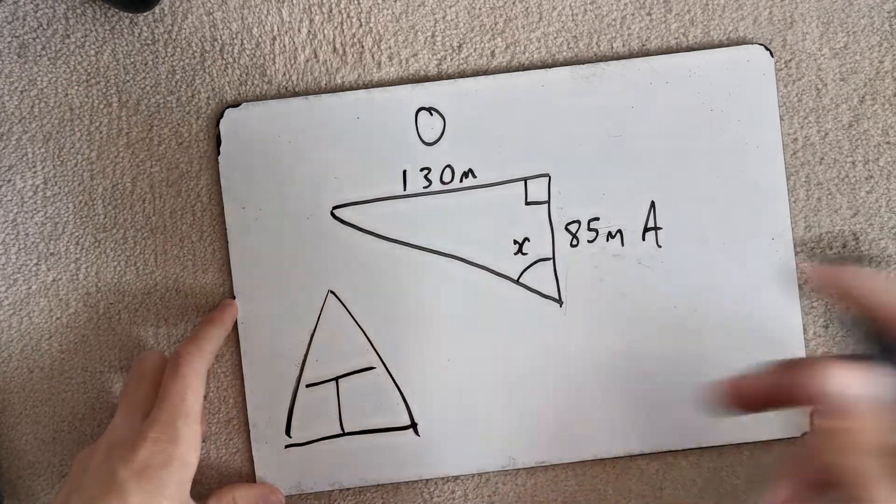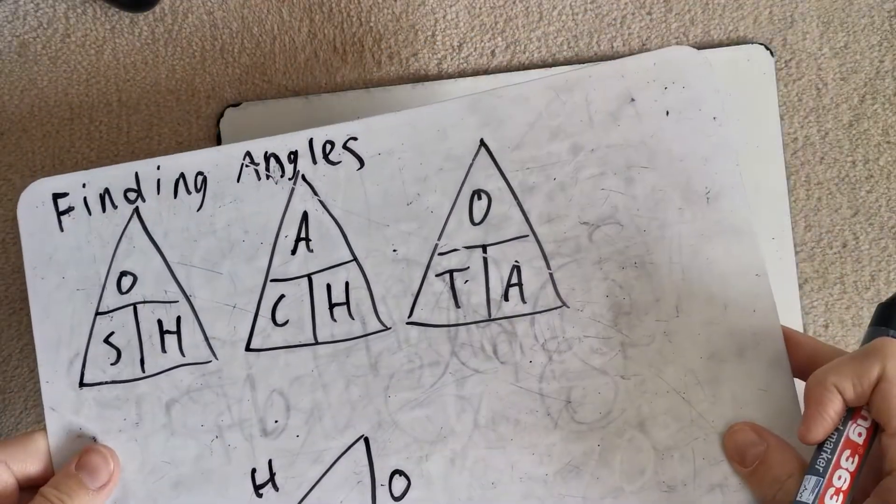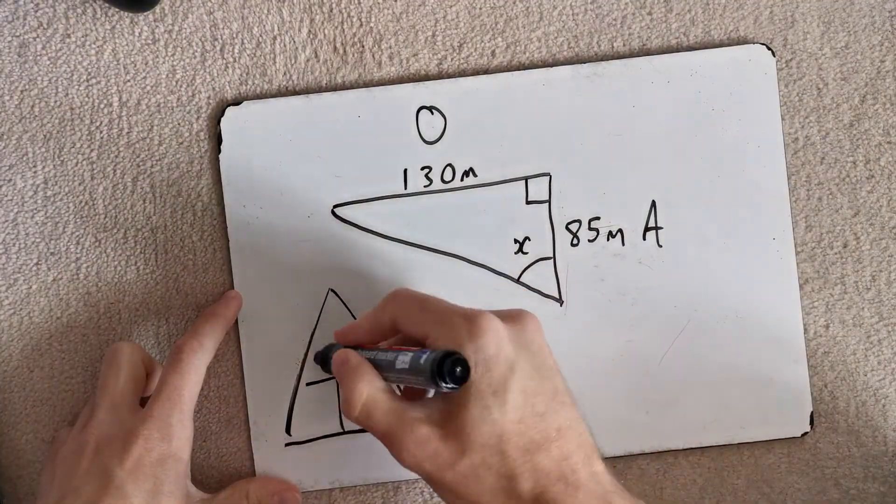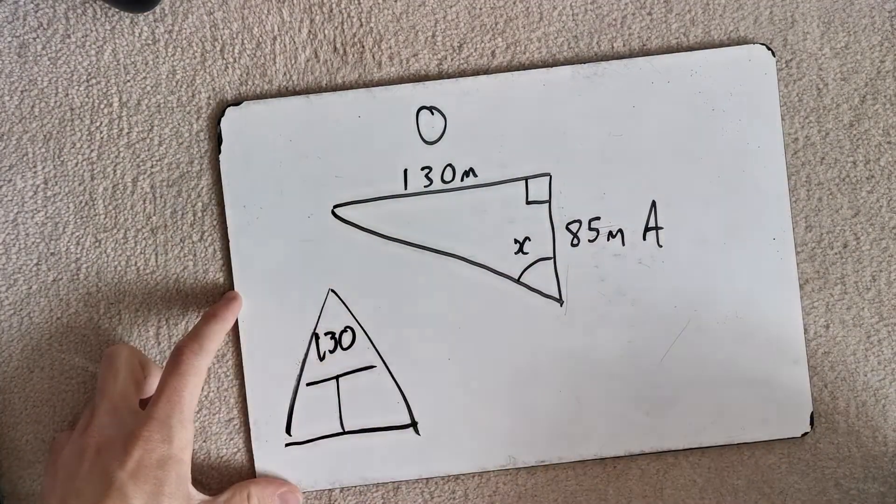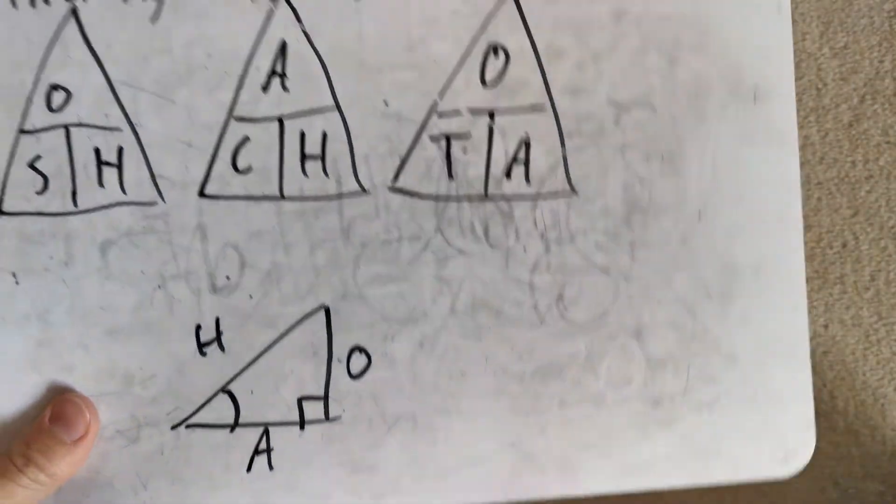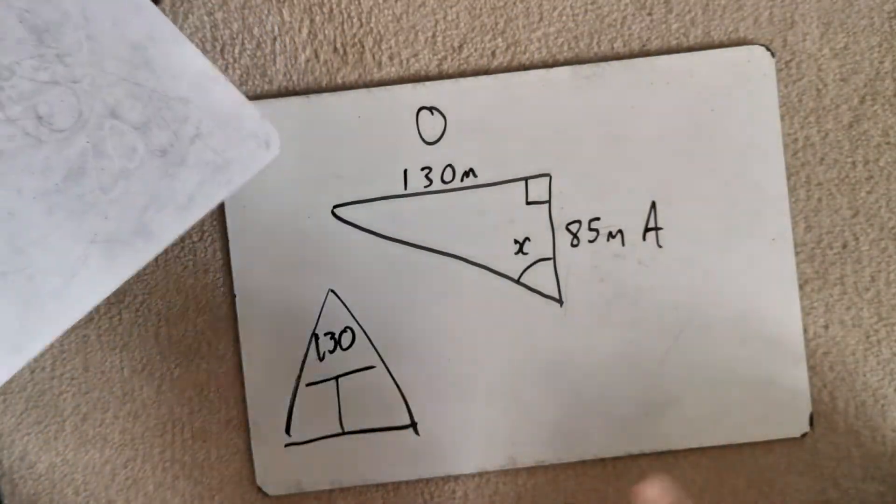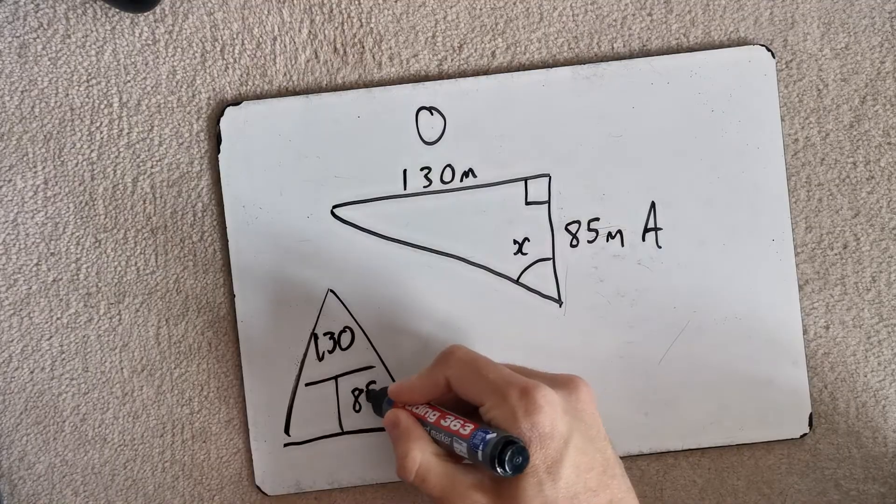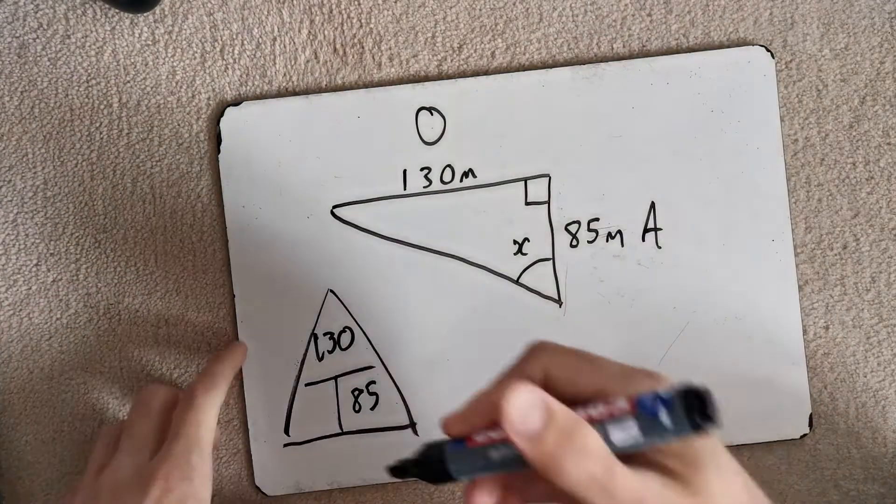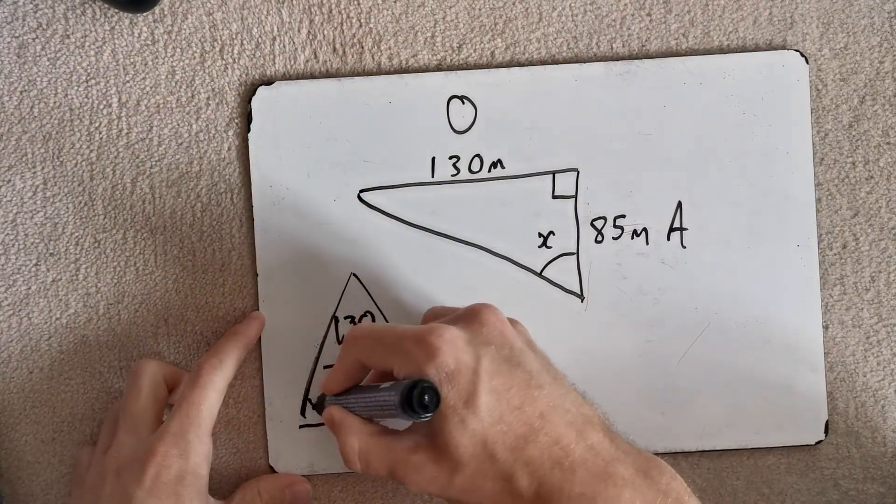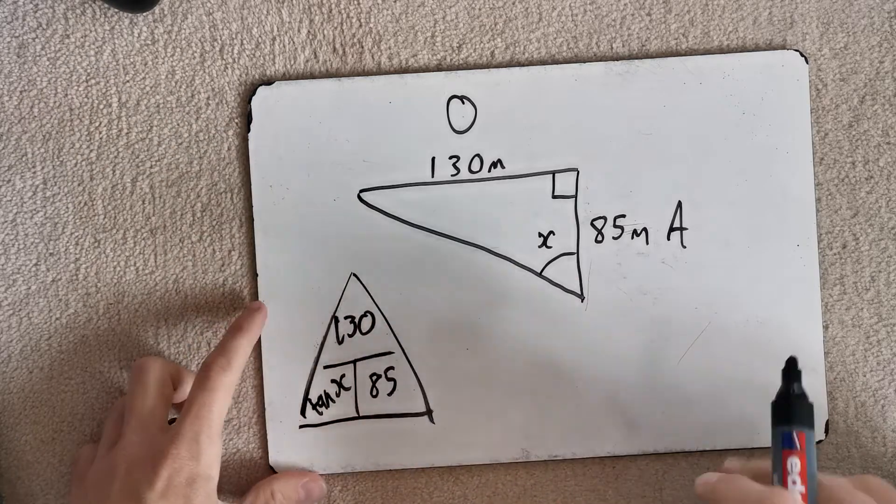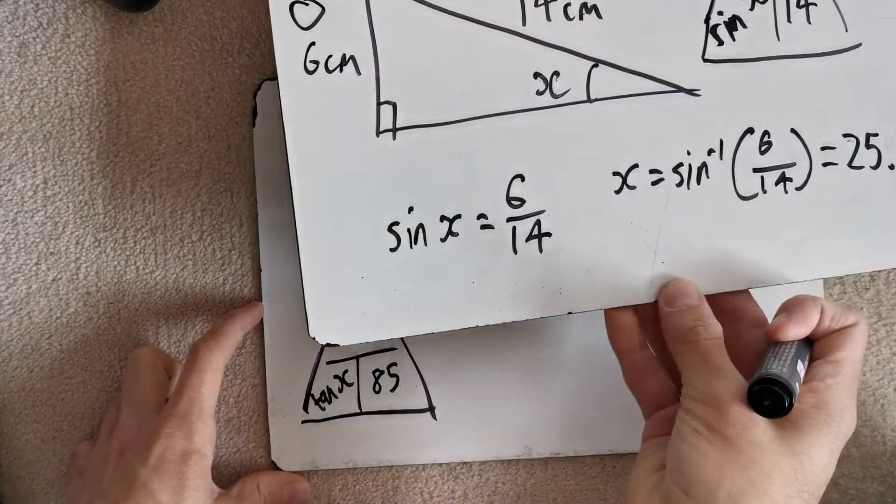On top we've got the O. So we're going to put in whatever's there. In this corner we've got the A. So we're going to be putting in the A. And then remember, we're using tan. So tan of X goes there. Look what we did here. So I'm going to do a similar thing here.